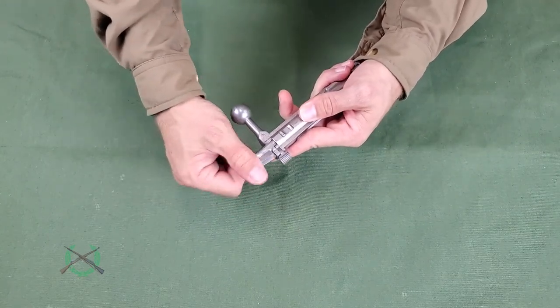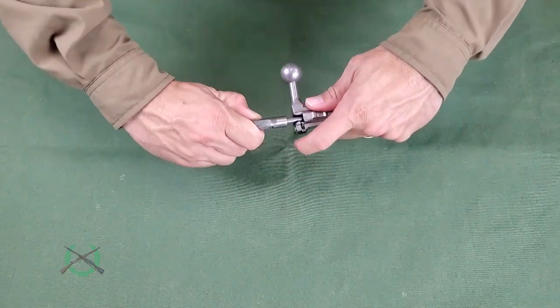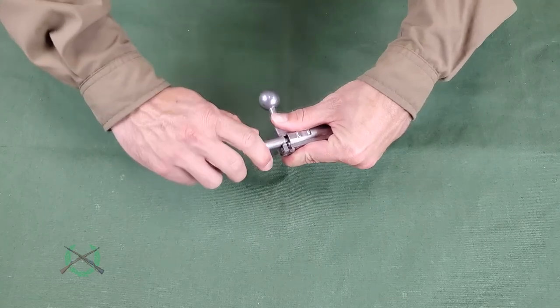After several rotations, draw the cocking piece to the rear. It will now be under spring tension. Push the safety to the on position, holding it there.